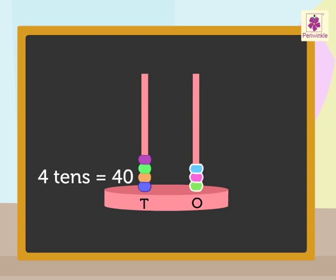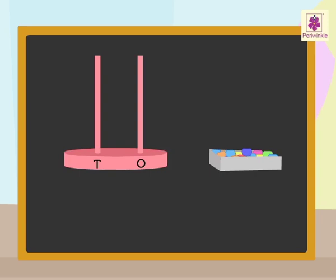Three beads in the ones rod means three ones, that is three. So, the number is forty plus three, that is forty-three.